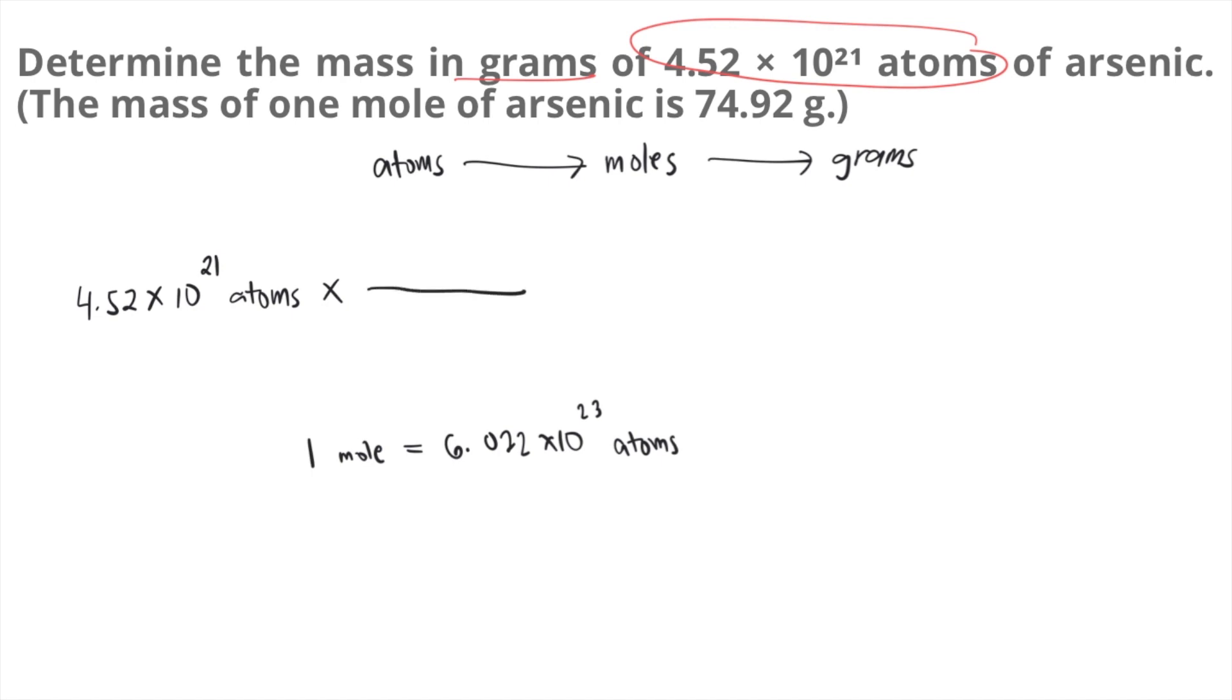So we put 1 mole on top. We put 6.022 times 10 to the 23 atoms below. As you can see, the atoms would cancel out. So now we have moles. We're done with our first step.